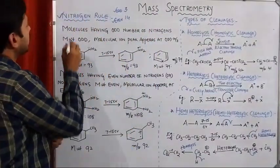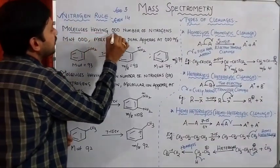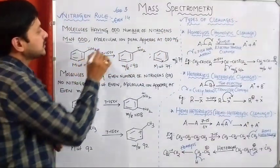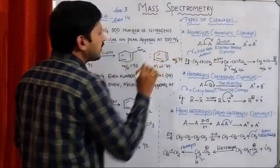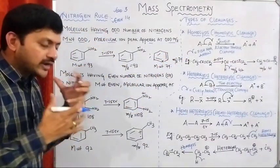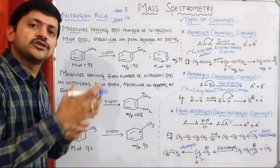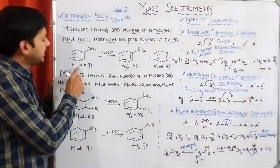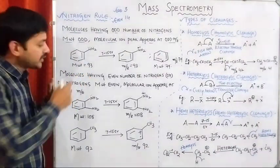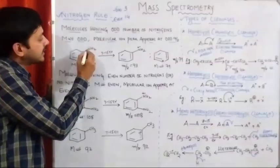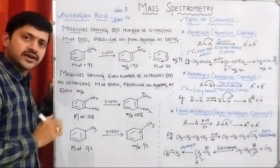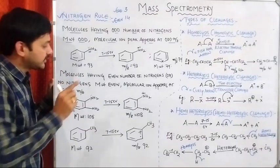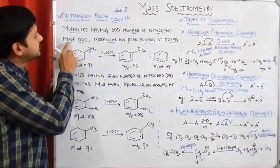If you see the nitrogen rule, what it is saying: molecules having an odd number of nitrogens will have an odd molecular weight, and the molecular ion peak will appear at odd M/Z. Let's understand this using an example. This is aniline. We all know that aniline's molecular weight is 93. If you see the structure of aniline, it contains one nitrogen atom — that is, an odd number of nitrogens. Then the molecular weight will be odd.